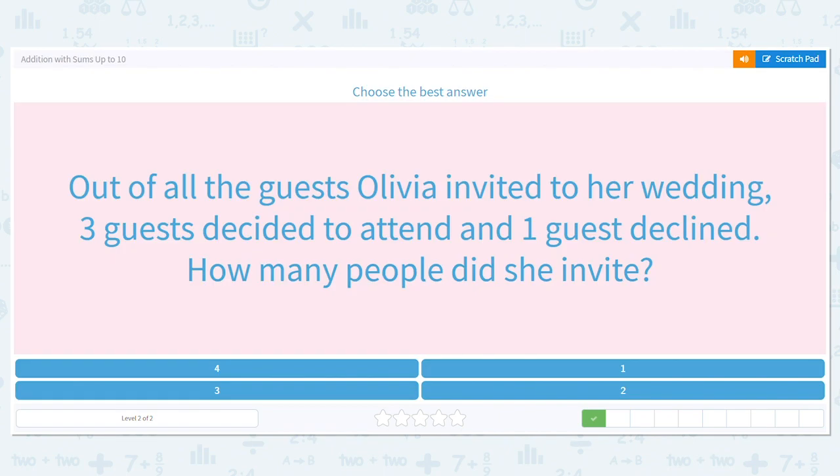Next, out of all the guests Olivia invited to her wedding, three guests decided to attend and one guest declined. How many people did she invite?